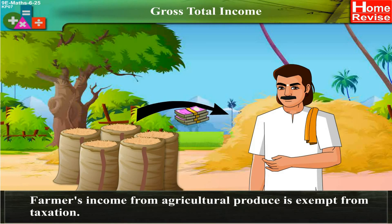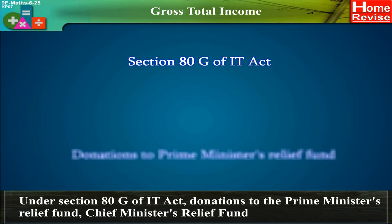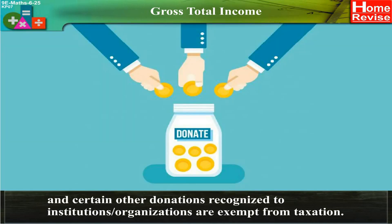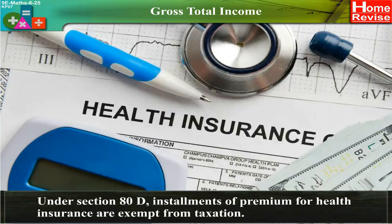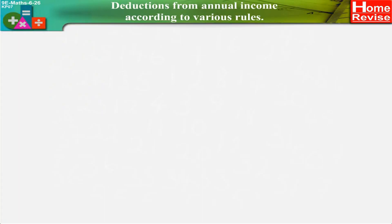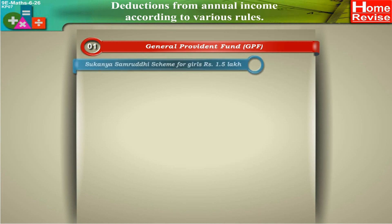Farmers' income from agricultural produce is exempt from taxation. Under section 80G of the IT Act, donations to the Prime Minister's Relief Fund, Chief Minister's Relief Fund, and certain other donations recognized to institutions or organizations are exempt from taxation. Under section 80D, installments of premium for health insurance are exempt from taxation. Generally, the maximum permissible deduction to various kinds of savings under section 80C is Rs. 1,50,000. Deductions from annual income are made according to various rules.